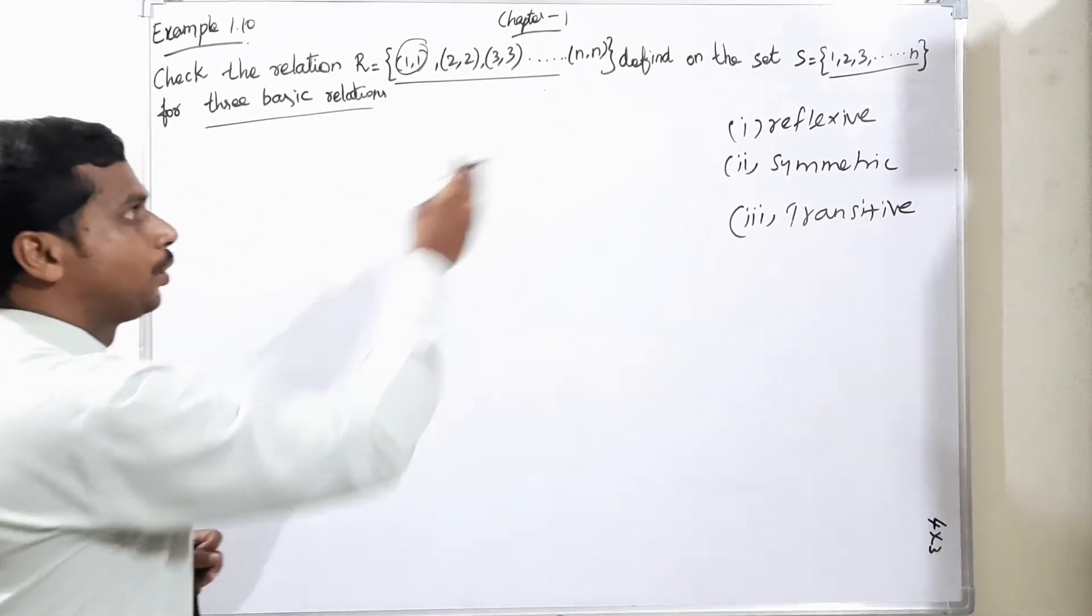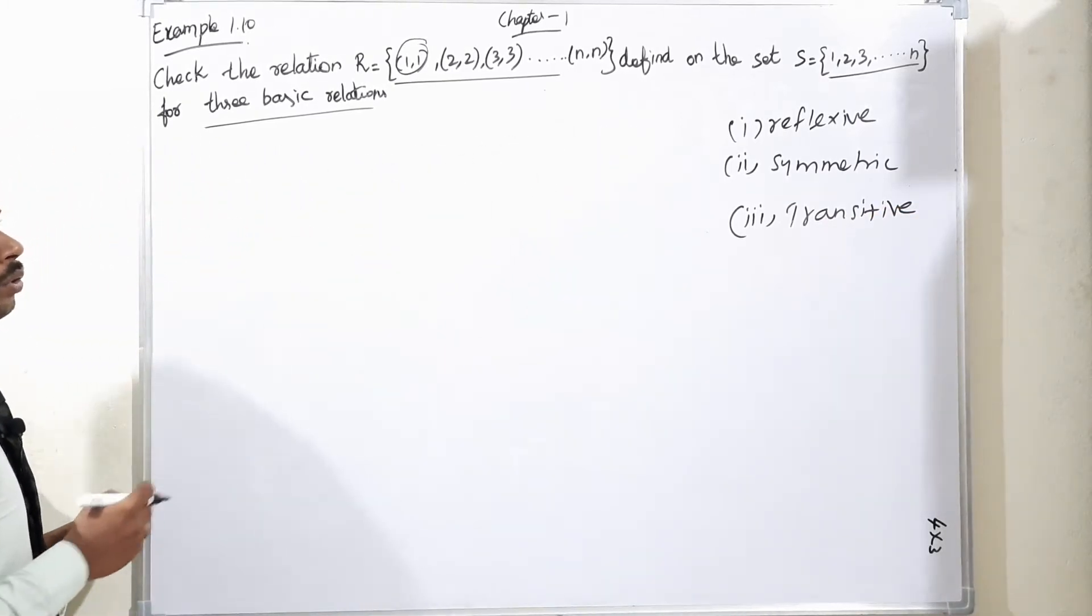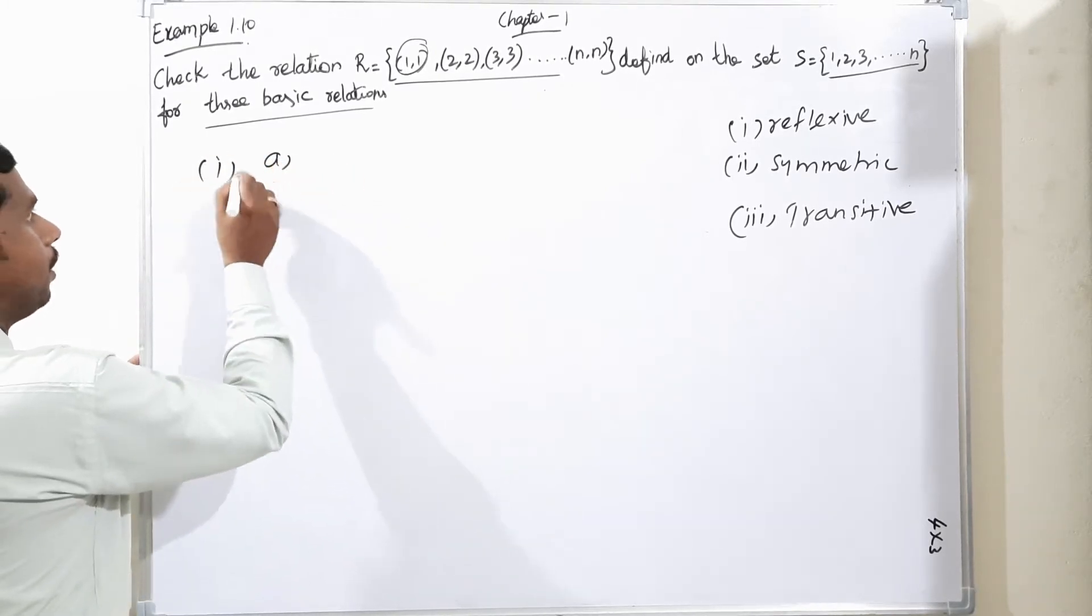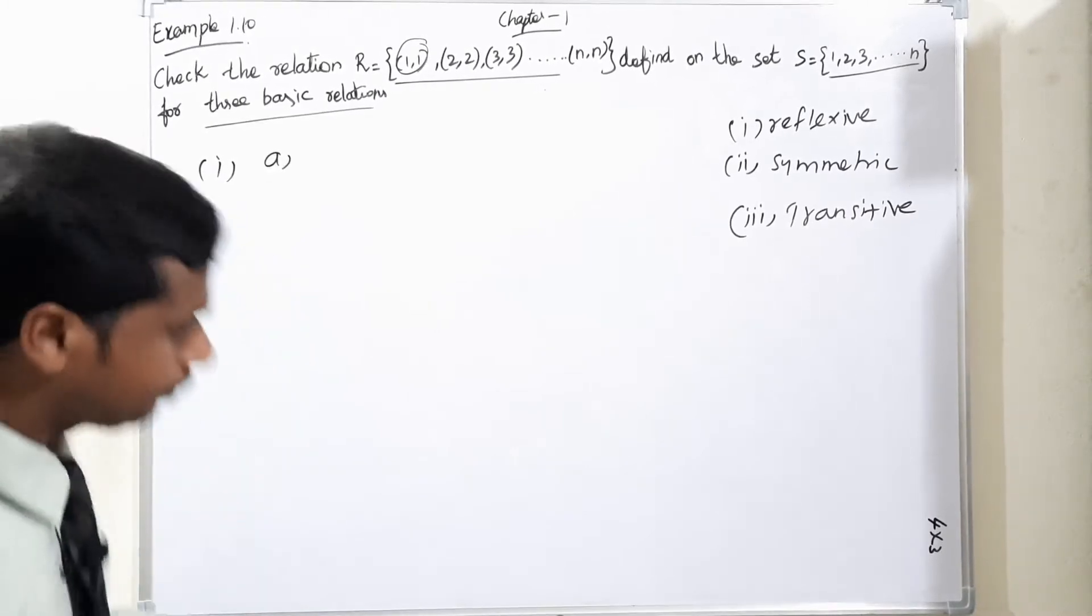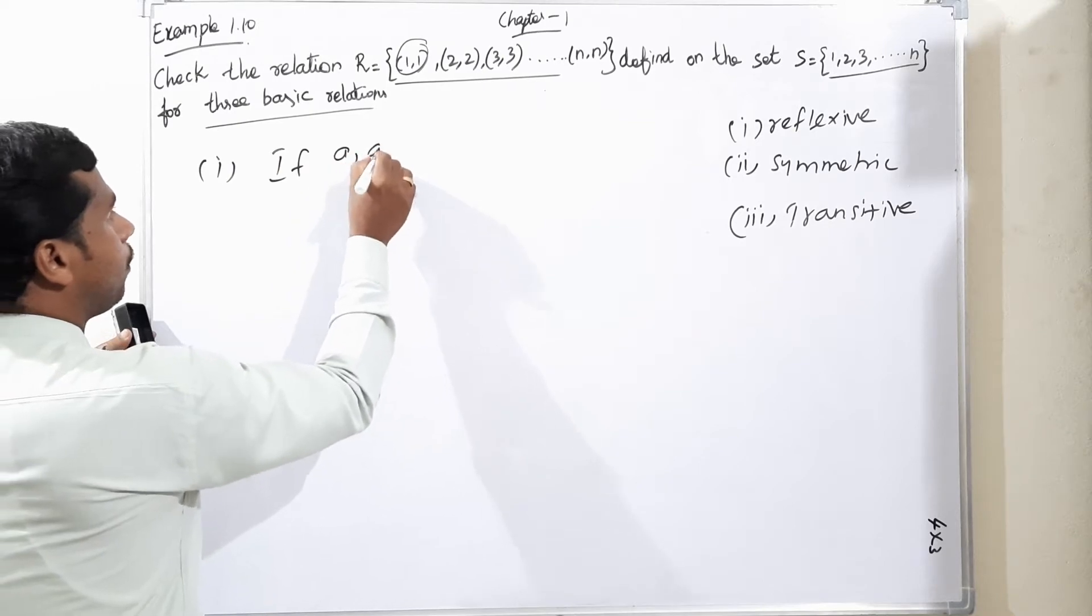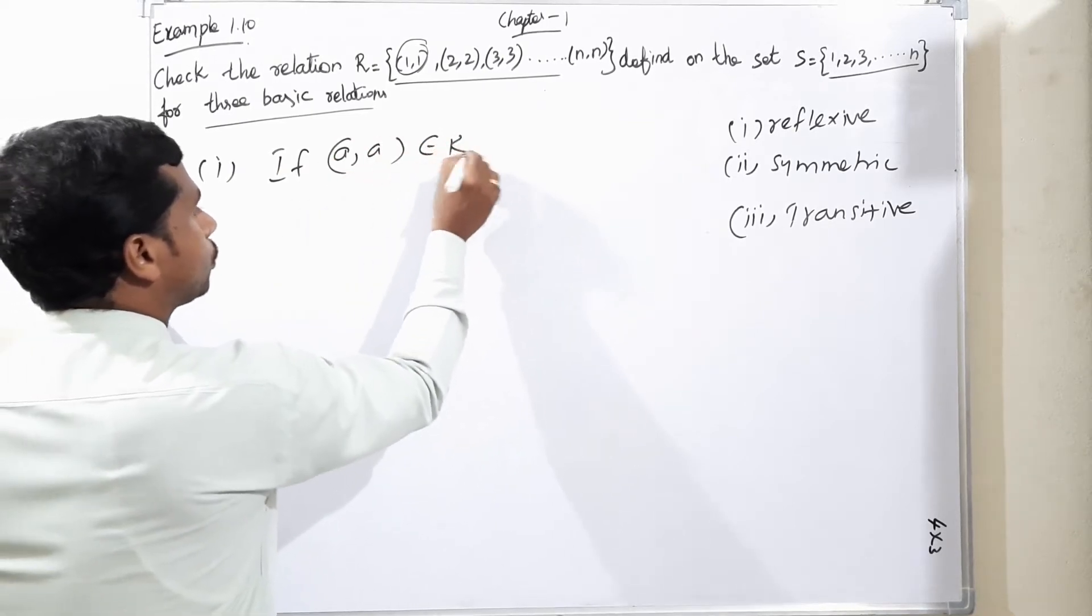First, I am moving to first condition. Reflexive. Condition one: if (a,a) belongs to R.